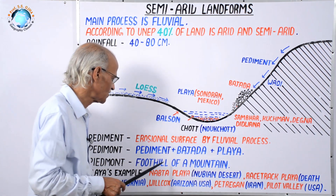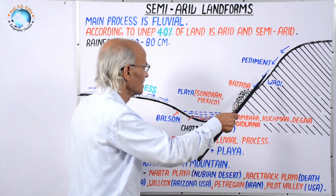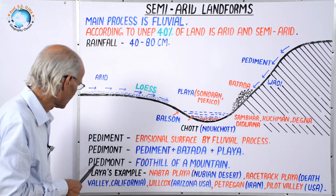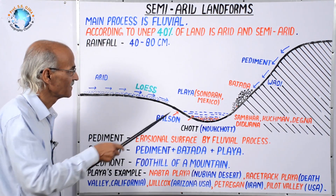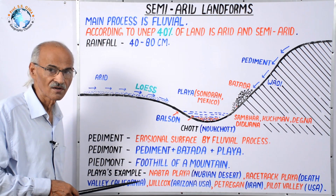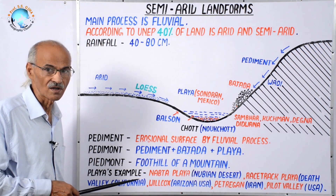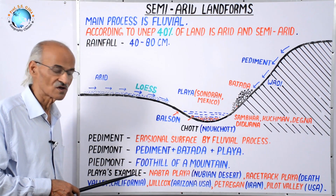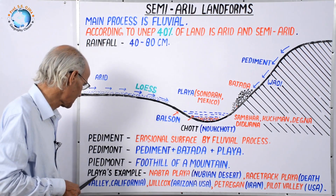Piedmont means foothill of a mountain — the foothill region. It is a common term used not only in semi-arid regions but everywhere. For example, the Appalachians, Aravallis, Himalayas, Caucasus, and Rockies — all mountains have a piedmont. Piedmont simply means the foothill region.